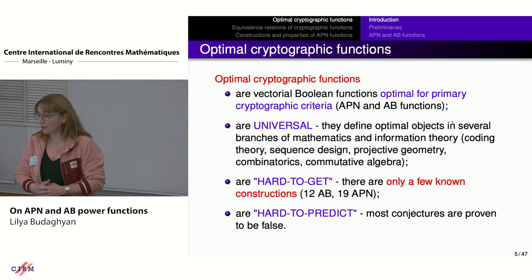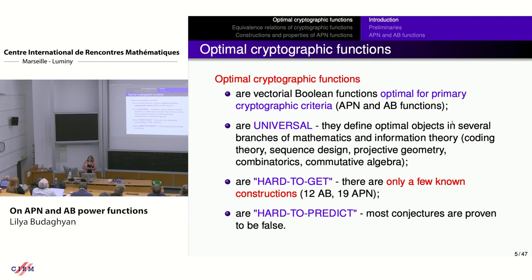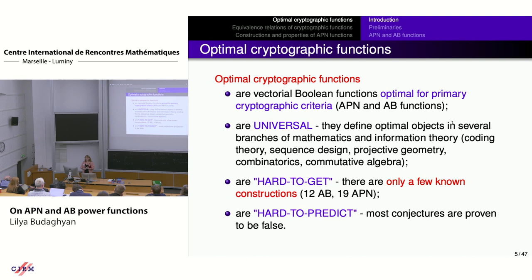For the two most powerful cryptographic attacks on block ciphers — linear and differential attacks — the corresponding properties are non-linearity and differential uniformity respectively. For algebraic attacks, the corresponding property is existence of low-degree multivariate equations involving input and output. High-order differential attack depends on algebraic degree, and interpolation attack depends on univariate polynomial degree. APN and AB functions are optimal vectorial Boolean functions with optimal differential uniformity and non-linearity.